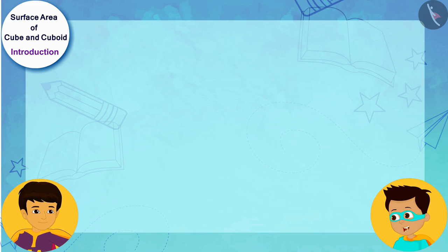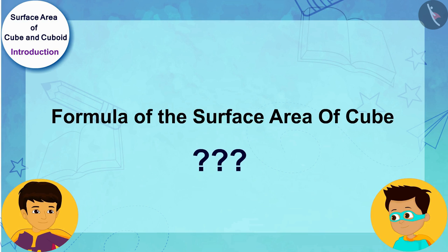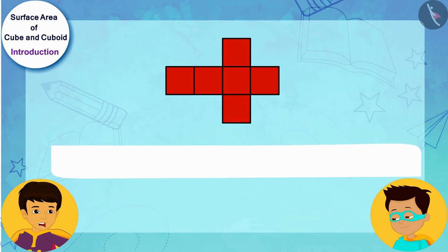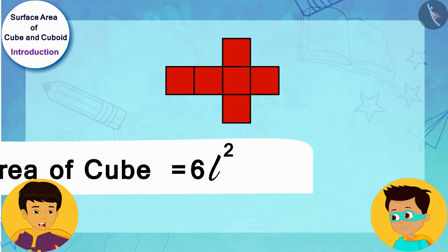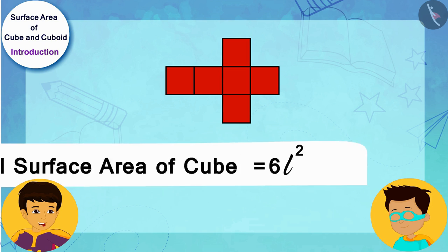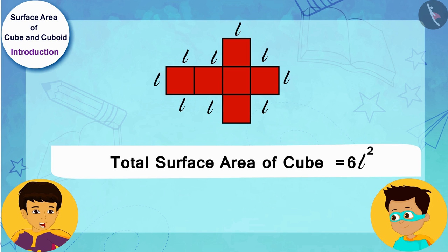In the previous class, we studied the surface area of a cube. Do you remember its formula? Absolutely, the total surface area of a cube can be determined by the area of any one side of the cube, which is square in shape. L squared multiplied by 6, where L is the length of any side of the cube.